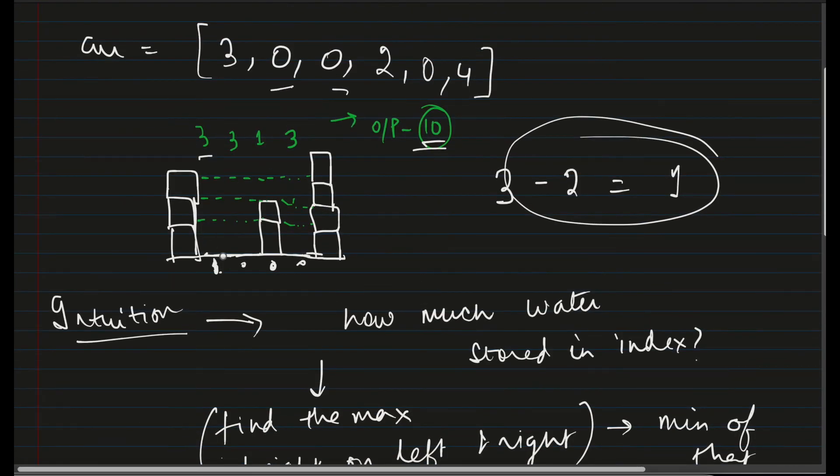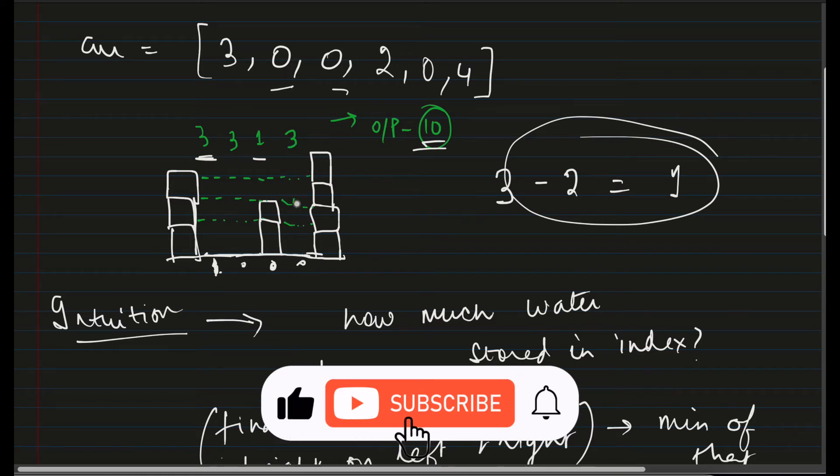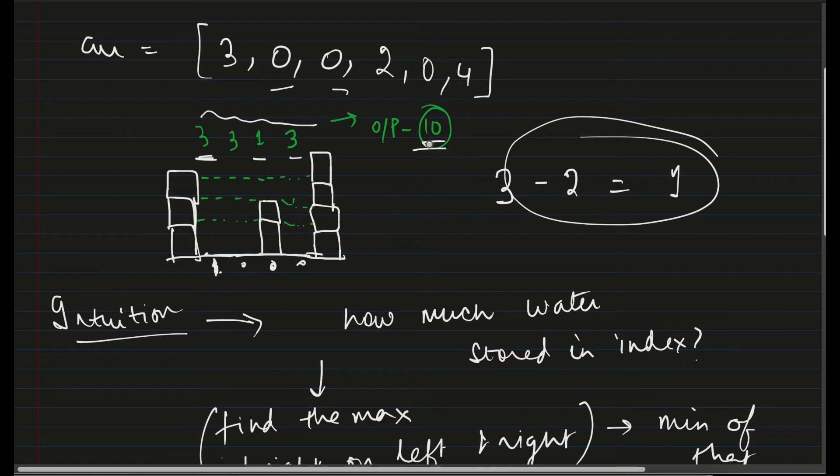So if we just do a quick dry run from here, from here, the maximum height again is 3 and 4. Minimum is 3. 3 minus 0 is 3. So that's why we got 3. Same thing applies for this third index also. For this, we just calculated that 3 minus 2 will give us 1. In this case, again, it is 0. So 3 minus 0 is going to give 3 units. If we add all of these is when we are going to get 10. So with that, now let's write the code for this.